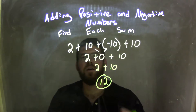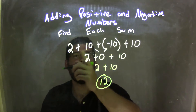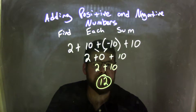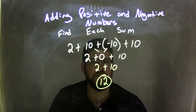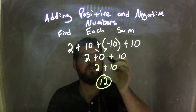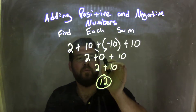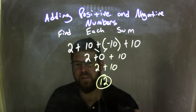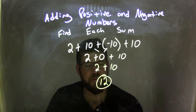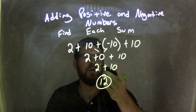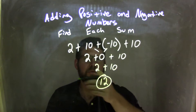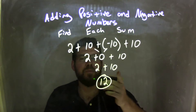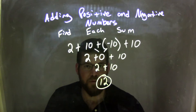So again, let's see what we did. We started with 2 plus 10 plus negative 10 plus 10. I knew that 10 plus a negative 10 canceled each other out and gave us 0. So the next step, I just got rid of the 0 because anything plus 0 is itself. So 2 plus 0 is just 2, and then brought down a 10, and 2 plus 10 came out to be 12.